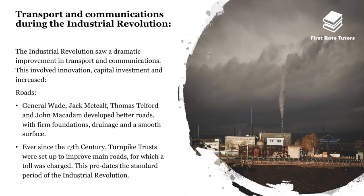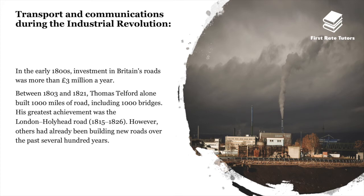The Industrial Revolution saw a dramatic improvement in transport and communications. General Wade, Jack Metcalfe, Thomas Telford and John McAdam developed better roads with firm foundations, drainage and a smooth surface. Turnpike trusts had been set up since the 17th century to improve main roads. In the early 1800s, investment in Britain's roads was more than three million pounds a year. Between 1803 and 1821, Telford alone built 1,000 miles of road including 1,000 bridges, with his greatest achievement being the London to Holyhead Road constructed between 1815 and 1826.